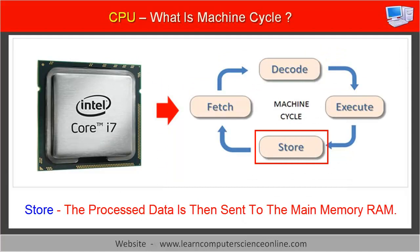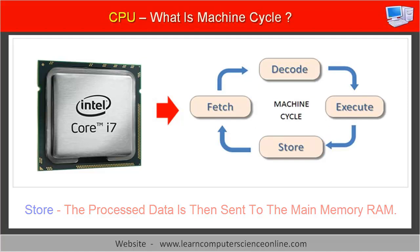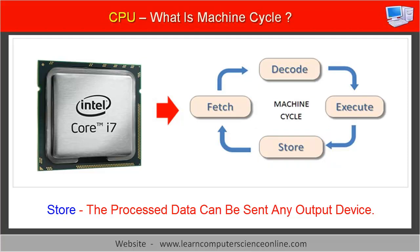The final stage of the machine cycle includes storing the processed data back into the memory. Once the ALU operates on the data, the processed data is then sent and stored into the main memory, RAM. This stored data in RAM can either be sent to any output device such as a monitor or printer, or to any permanent storage device to be stored for future use.